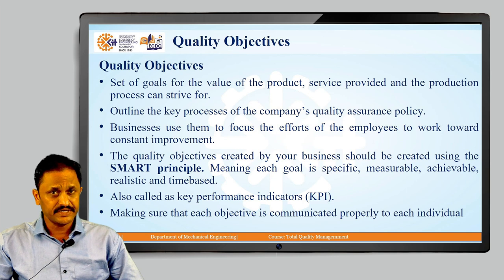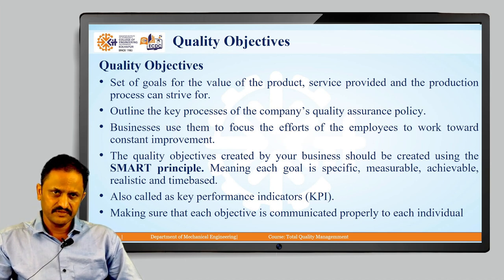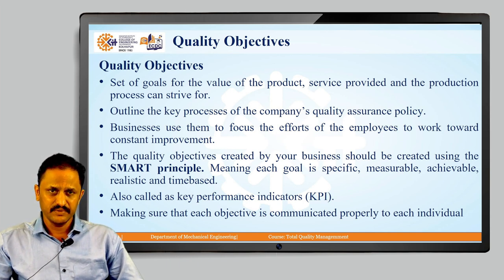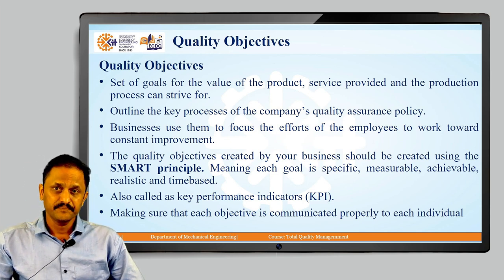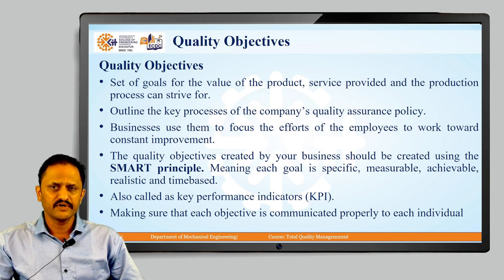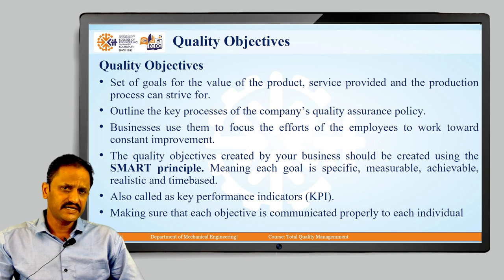These quality objectives should be created using the SMART principle. SMART is an abbreviation for Specific, Measurable, Achievable, Realistic, and Time-based. The objectives should be specific — there should be no ambiguity. They should be measurable, meaning quantifiable in terms of quantity or money. They should be achievable — not unrealistic or out of context. They should be realistic, and they should be time-based, meaning whatever timeframe is set for achieving that objective, it should be achieved within that time.